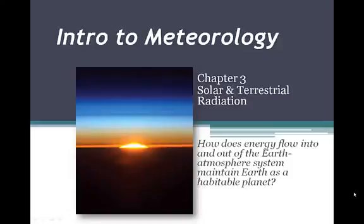Let's take a look now at Chapter 3, which is all about solar and terrestrial radiation. Our driving question here is how does energy flow into and out of the Earth's atmosphere system maintain Earth as a habitable planet?